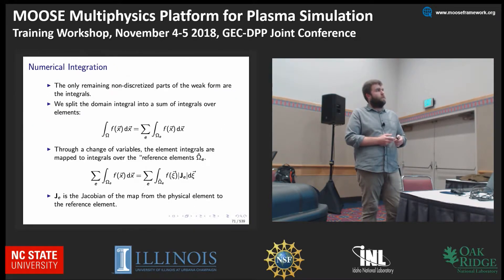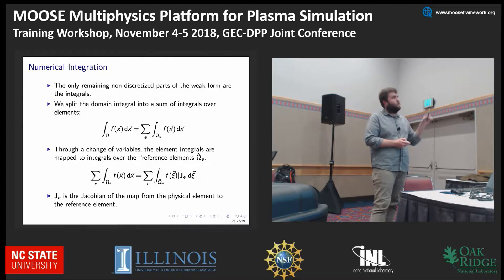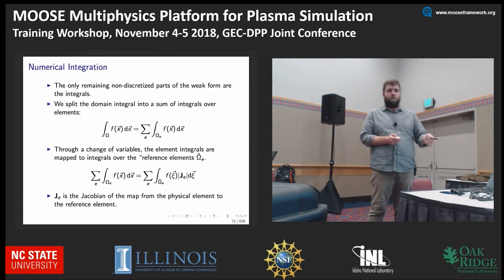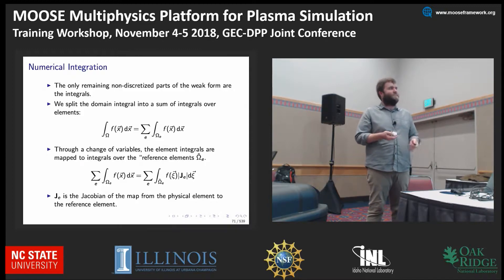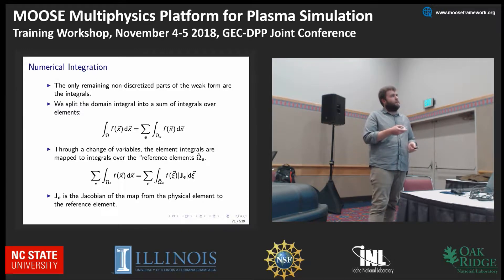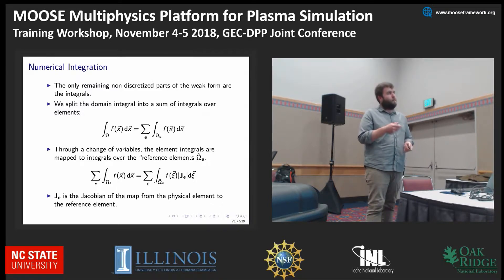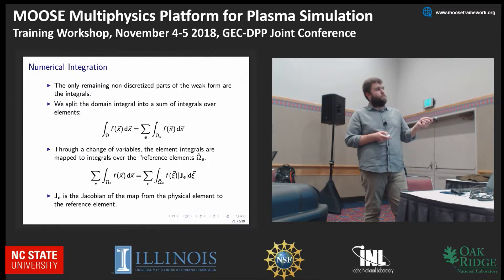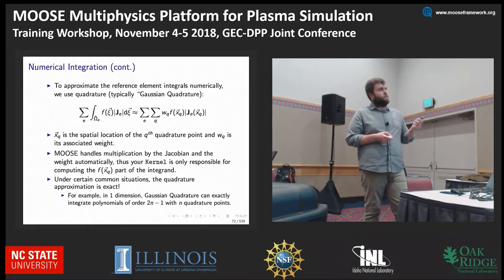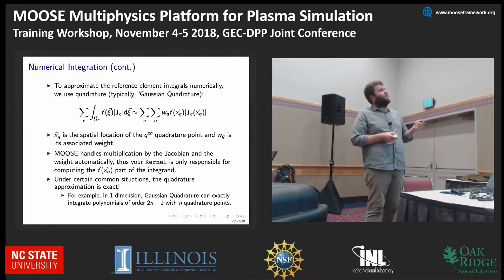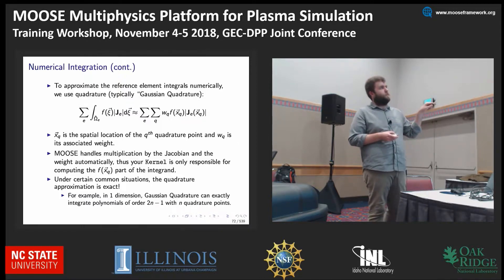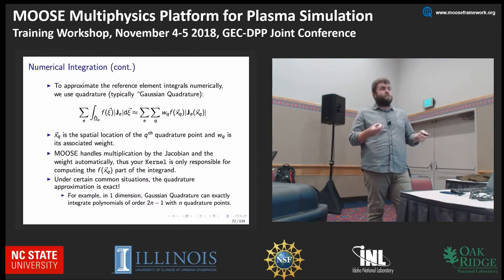This is numerical integration. This is the only part we haven't discretized yet. We're splitting the domain integral into a sum of integrals over each element — each cell in our mesh. We're mapping between the physical domain and the reference element. This Jacobian is important in Moose code. We're approximating these integrals numerically using quadrature, where xq is the spatial location of the q-th quadrature point, and the weight associated with that quadrature is determined by your quadrature rule.